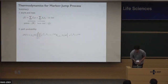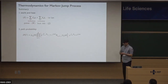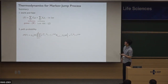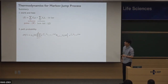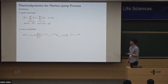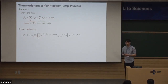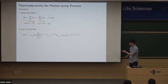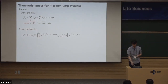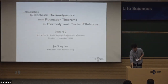Let me summarize this second part. I talked about how to define work and heat in the Markov jump process — this is the thermodynamic first law — and how to calculate the path probability. I will use this path probability in the next lecture. Let me now go into the original lecture two.